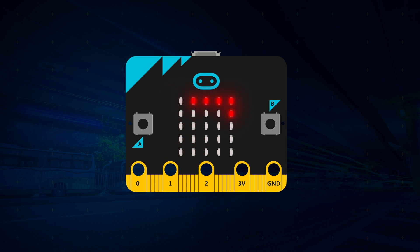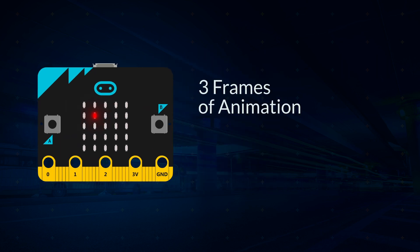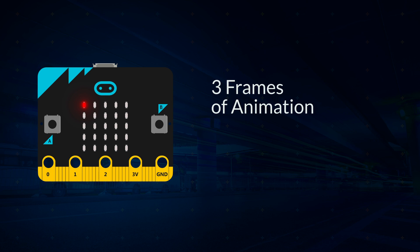An animation is a series of images that are displayed one after another to look like they're moving. You can manually make an animation on your micro:bit by changing which LEDs are on and off in a sequence. In this short animation, the red dot will move one space to the right, then down one space. These are the three frames of the animation.